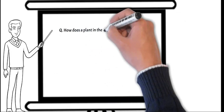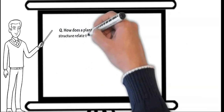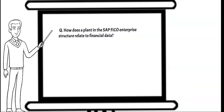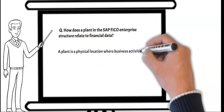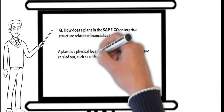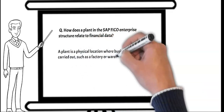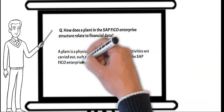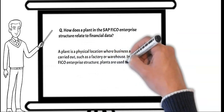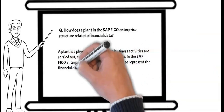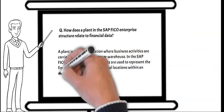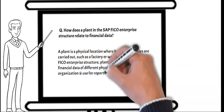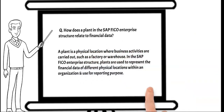Next question: how does a plant in the SAP FICO enterprise structure relate to financial data? A plant is a physical location where business activities are carried out, such as a factory or warehouse. In the SAP FICO enterprise structure, plants are used to represent the financial data of different physical locations within an organization and are used for reporting purposes.